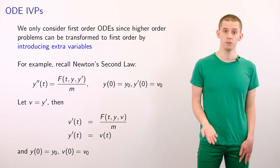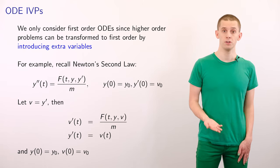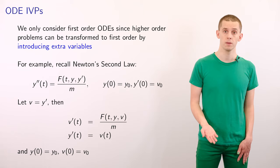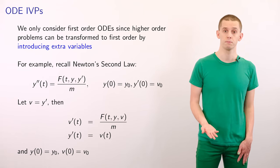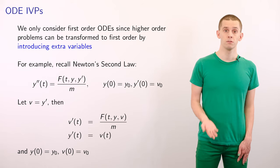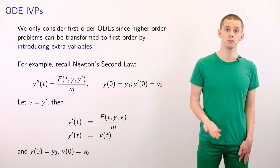And we might have two initial conditions, that y of 0 is equal to y subscript 0, and y prime of 0 is equal to v subscript 0, a velocity.